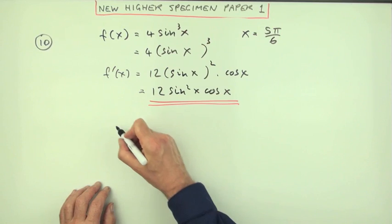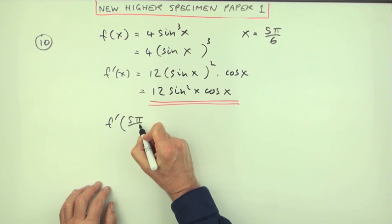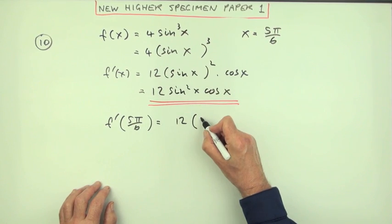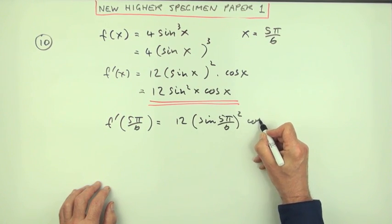Because what's the value of it at this? Well that'll be 12 times, I'll put the brackets back in now, the sine of 5π/6 squared times the cosine of 5π/6.